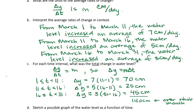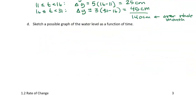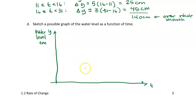Now we're asked to sketch a possible graph. We want to graph the water level over time — we're only given information about the rates of change, but we want to try to graph the water level over time. I'll put water level on the y-axis and t, the day of the month, on the horizontal axis, where y represents the water level in centimeters. We actually cannot draw the exact graph because we don't have enough information, so we're just drawing a possible graph.